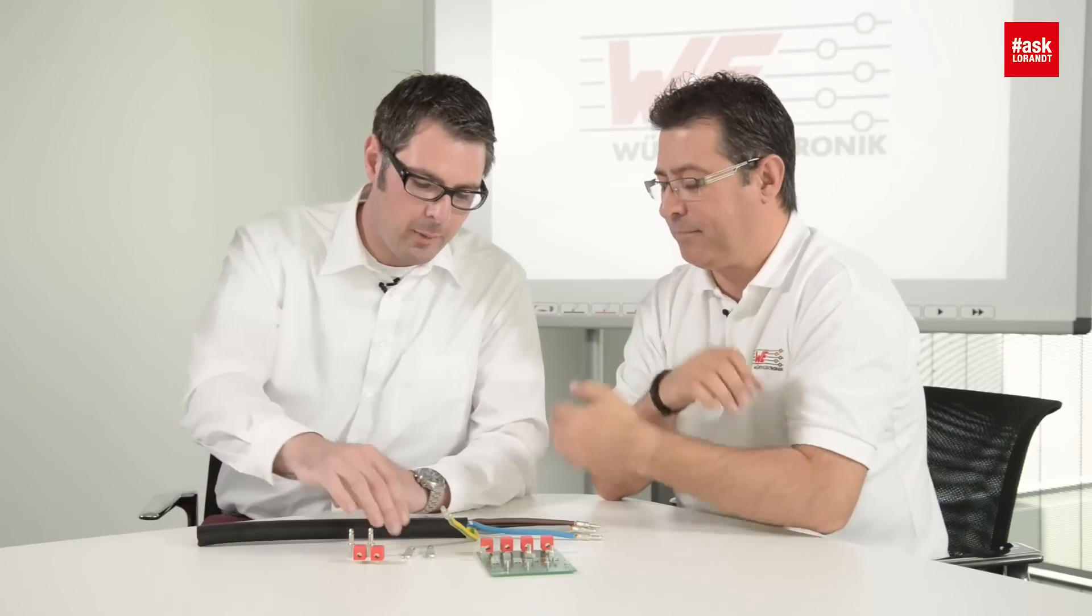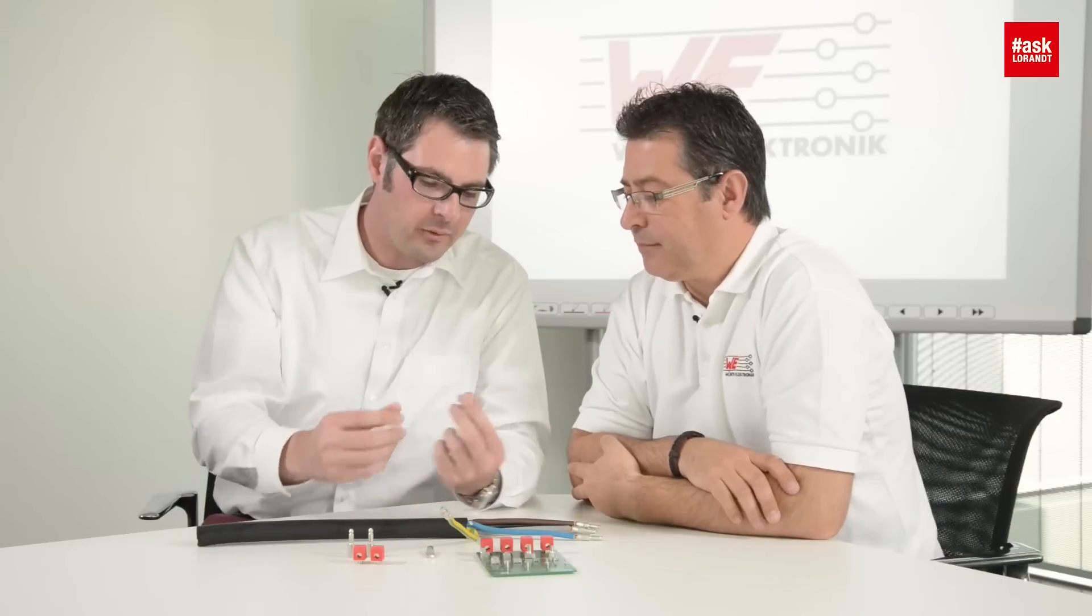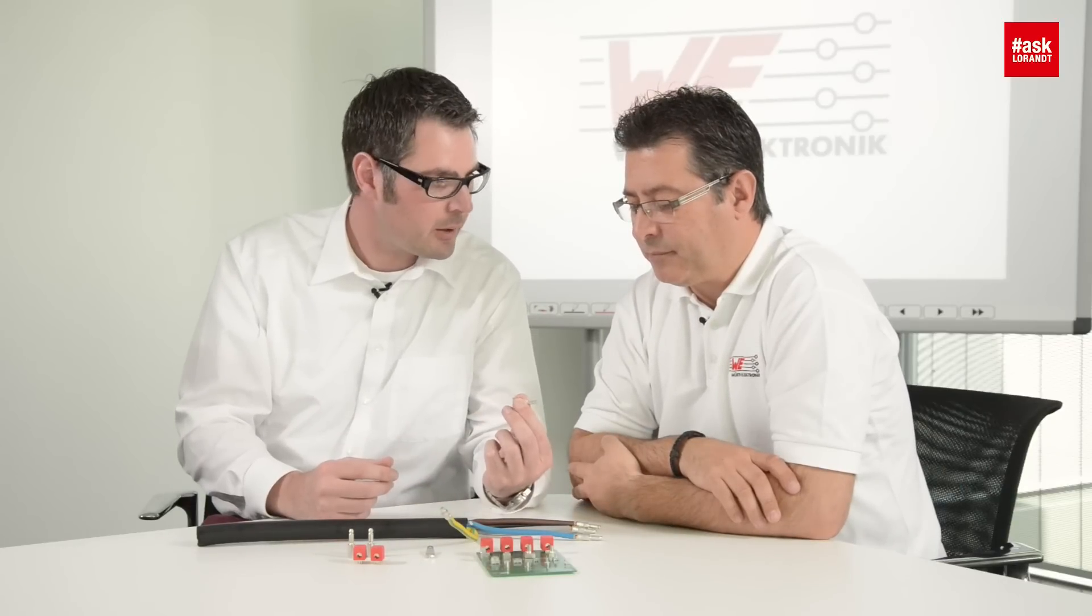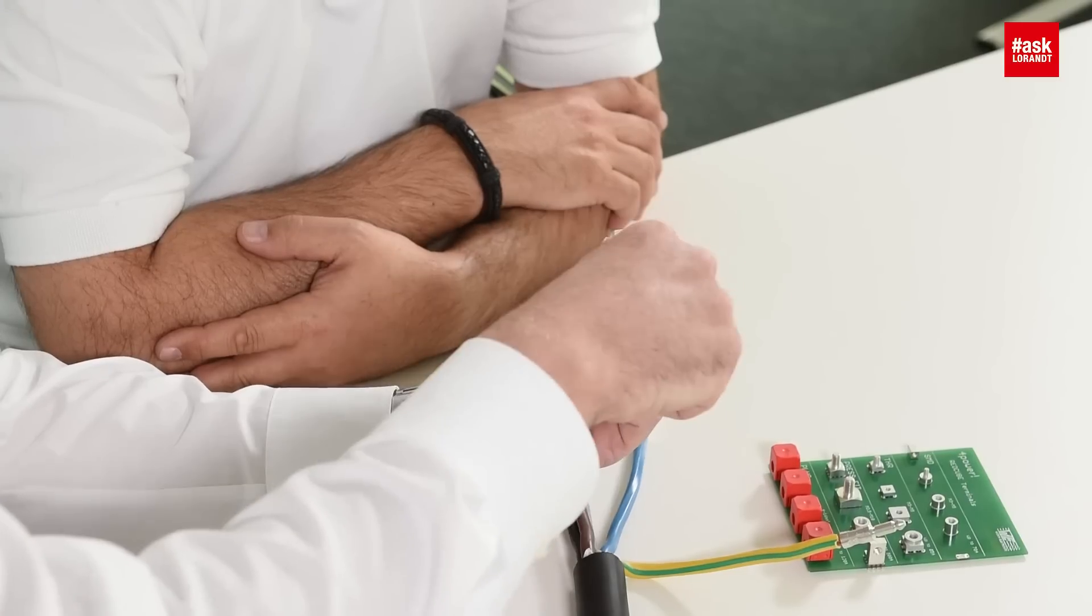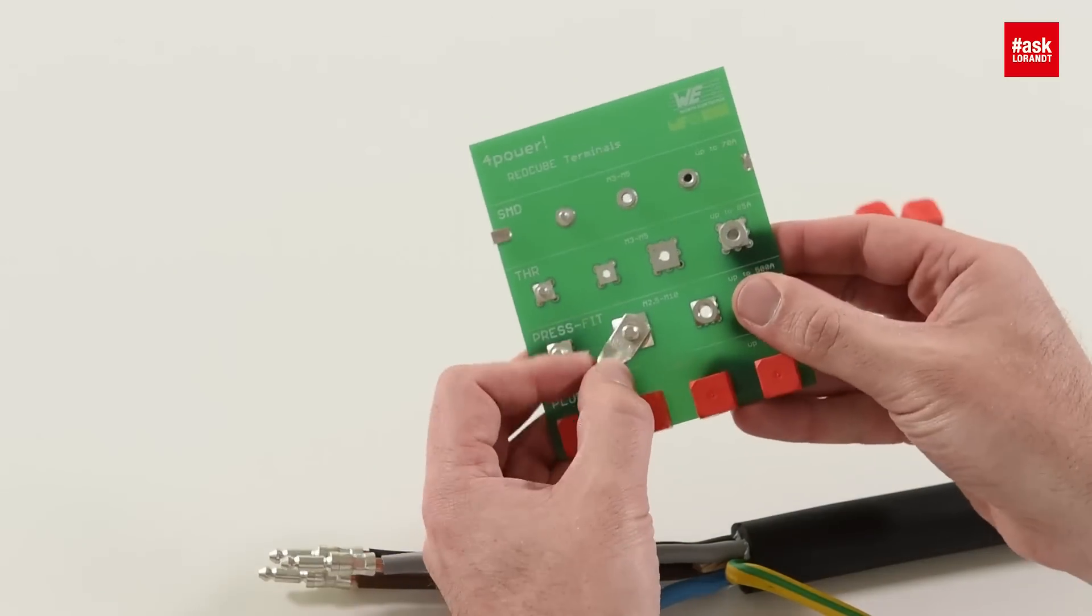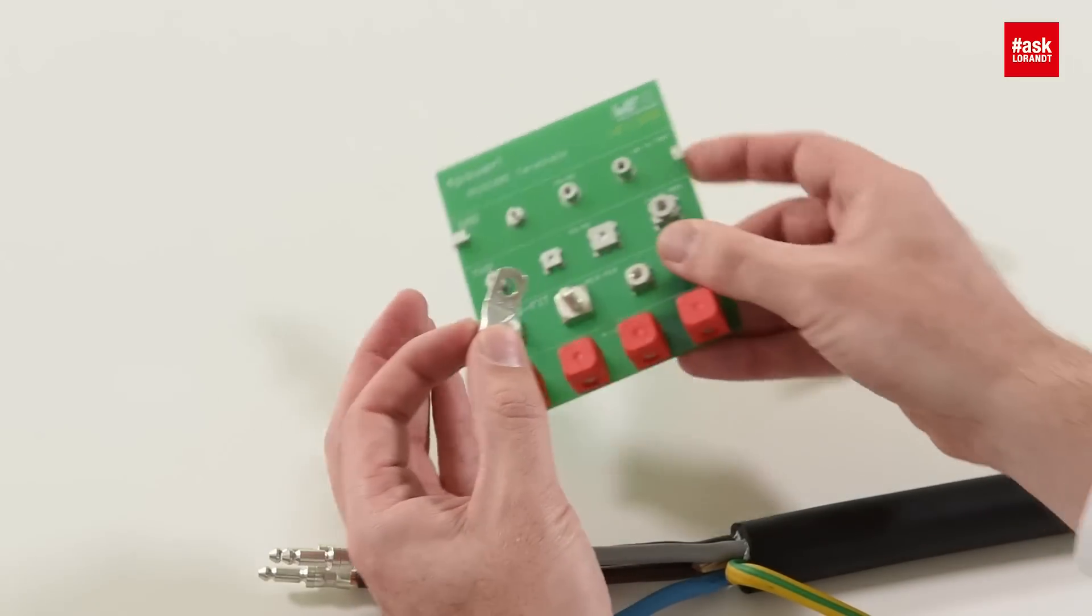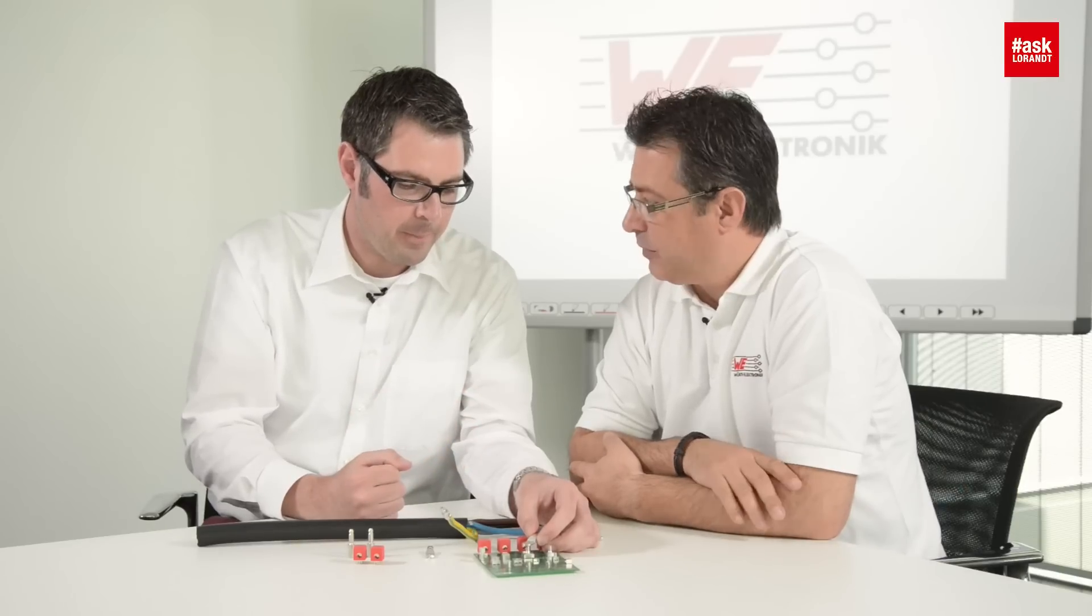Normally for 16 square millimeter, we use a solution like this one with a normal cable lug. We crimp the wire inside and then fix it on the PCB. We have to screw it. Yeah. But that's not a really fast assembly process. I want to get away with that.